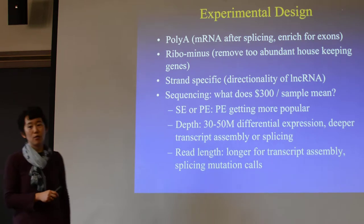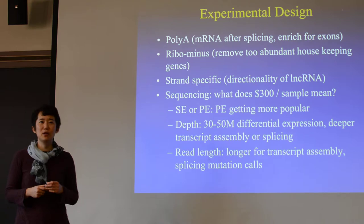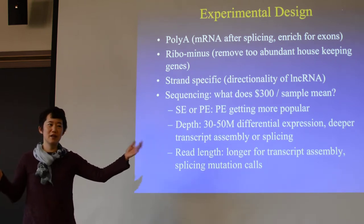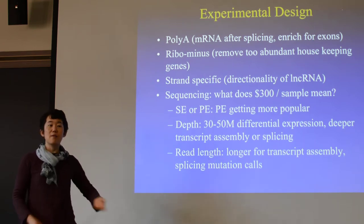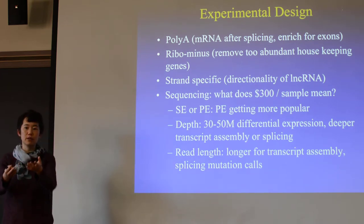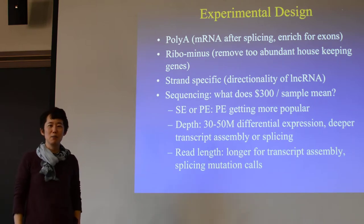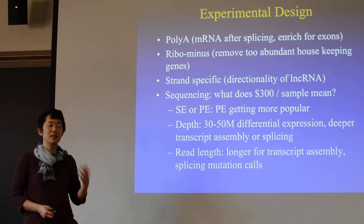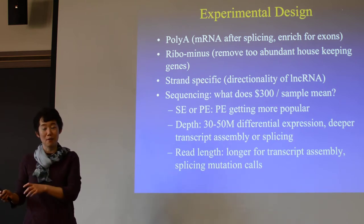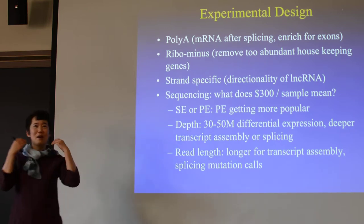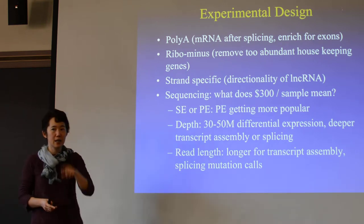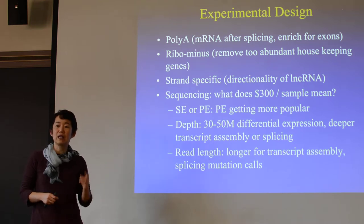When high-throughput sequencing came around, initially people sequenced like 5 million reads per sample. Later it got cheaper and cheaper — 10 million, 20 million, 30, 50 reads. Companies now can just take your RNA, prepare the sequencing library, and sequence for you. I heard recently one company can do library preparation plus sequencing for $200, while at our core facility just preparing the library from RNA costs $275. But you have to ask what that $200 actually means in terms of the sequencing reaction.